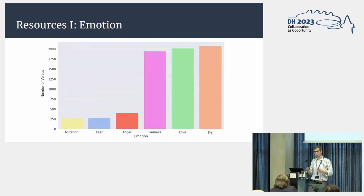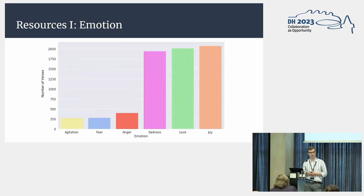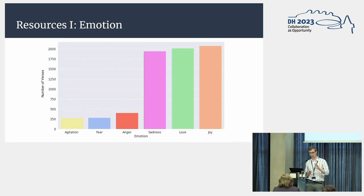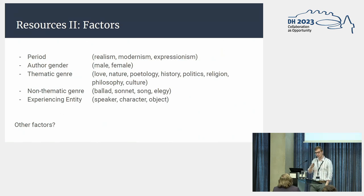Here you can see the distribution of the annotated emotions. We annotated sadness, love, and joy most often, and agitation, fear, and anger a lot less often. But this distribution varies greatly by poem — there are some poems that only represent one emotion, some that represent no emotions at all, and so on. Probably there are some factors involved when it comes to what kind of emotions are represented, and we want to investigate some of these factors in our study.